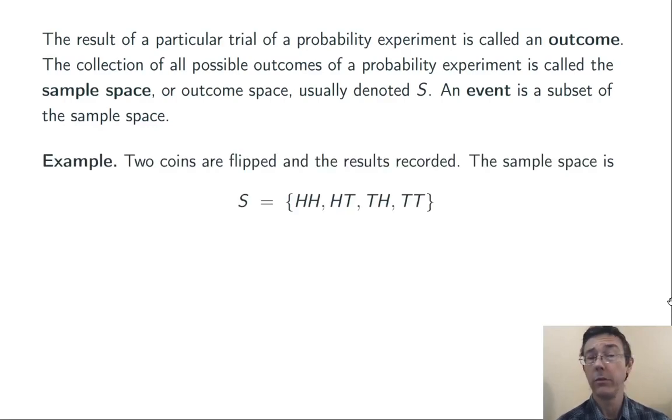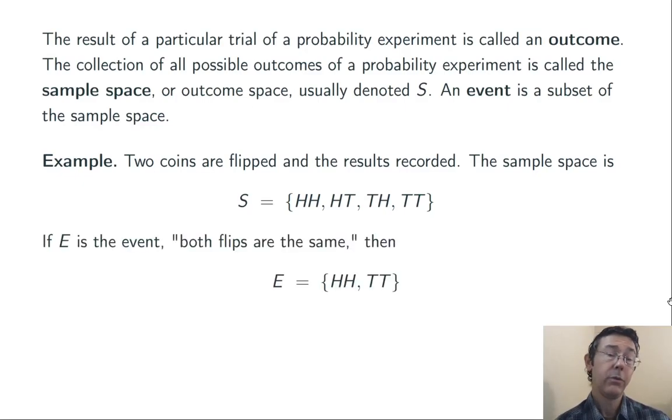I think this all makes more sense when we do an example. So here we go. Let's flip two coins and just record the results. The sample space consists of four outcomes: heads-heads, heads-tails, tails-heads, and tails-tails. If we let E be the event both flips are the same, then we have two outcomes in that event: heads-heads, tails-tails. This is a subset of the sample space.